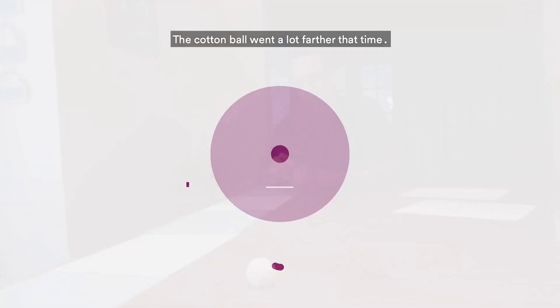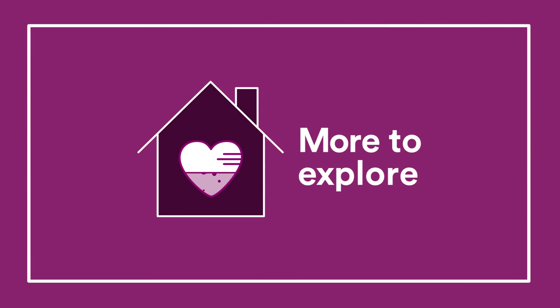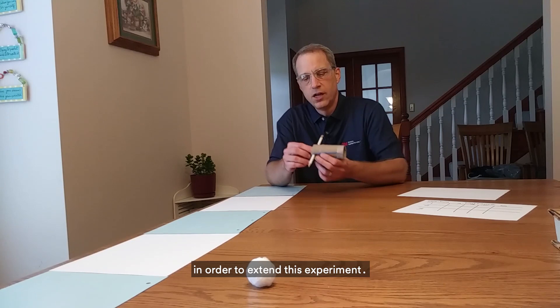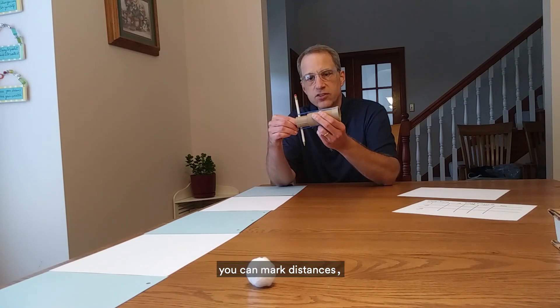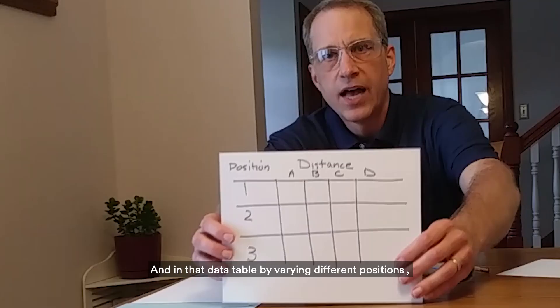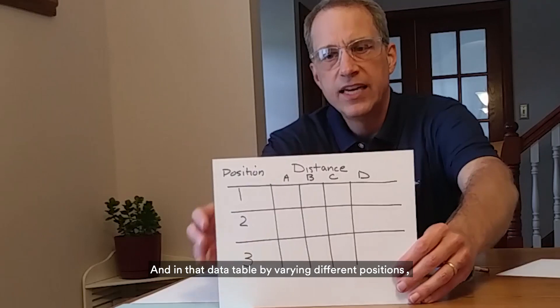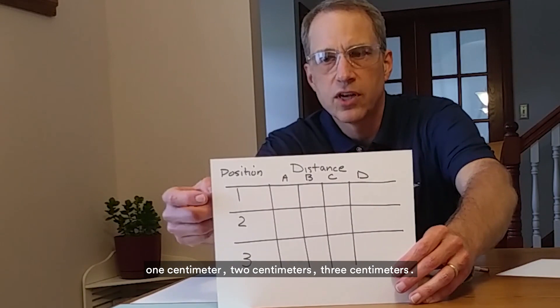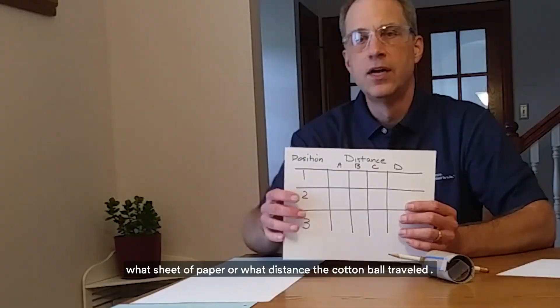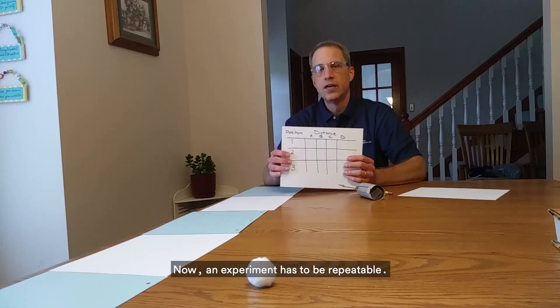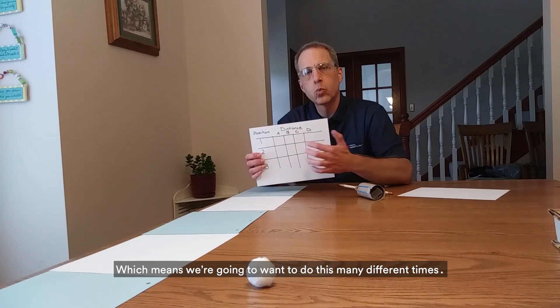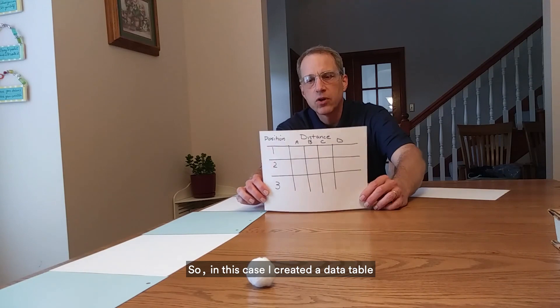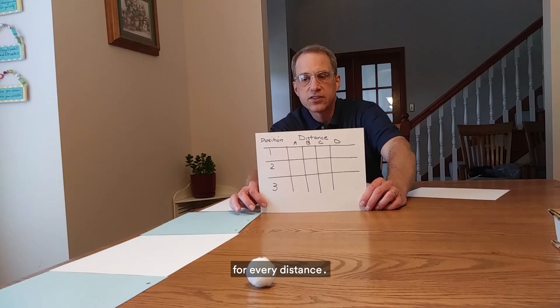Here are some things you can do to extend this experiment. You can mark on the inner tube distances — say one inch, or one centimeter, two centimeters, and three centimeters from the pencil. Then you could create a data table, varying different positions — one centimeter, two centimeters, three centimeters — and record what sheet of paper or what distance the cotton ball traveled. An experiment has to be repeatable, which means you're going to want to do this many different times. I created a data table that does four different trials or four different launches for every distance, and that's the way we can take the fun of launching this cotton ball and turn it into an actual scientific experiment.